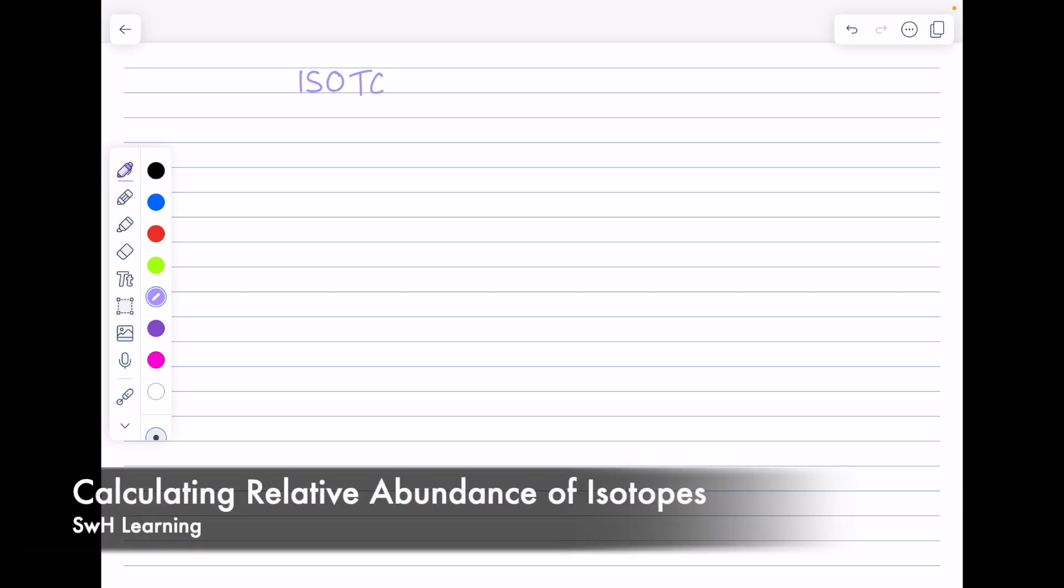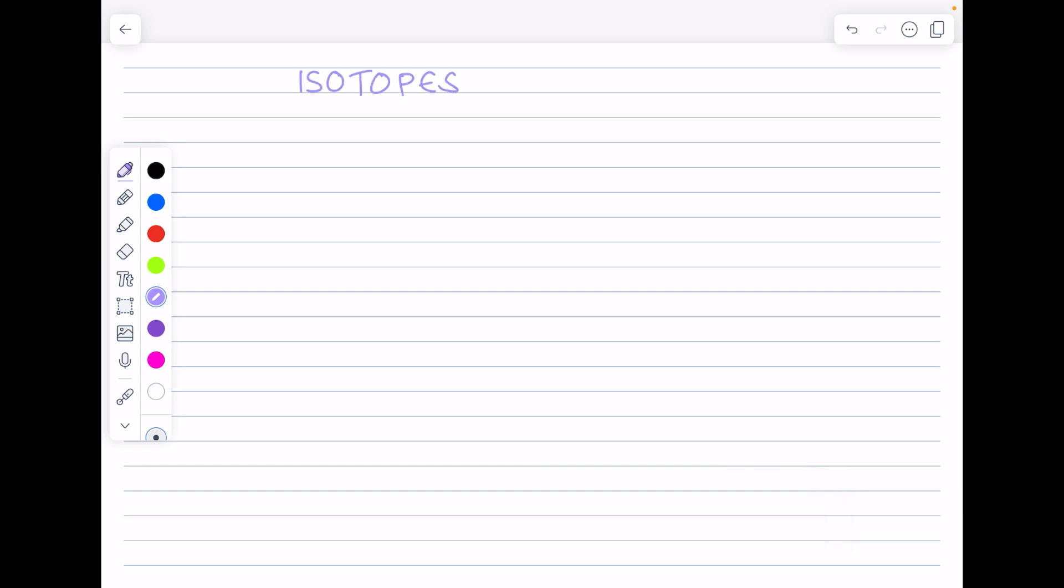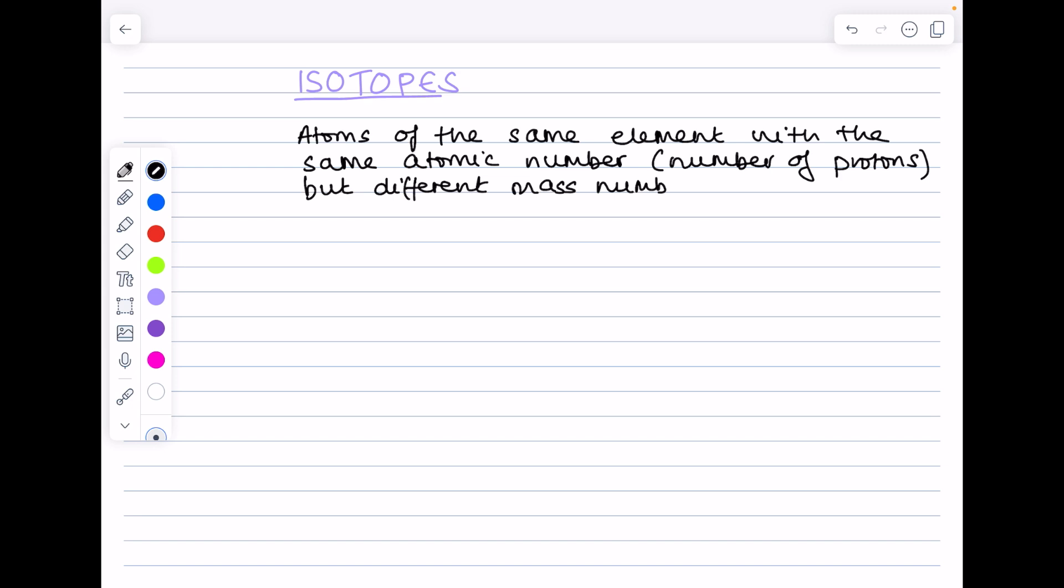Today's A-level chemistry video is all to do with isotopes. We'll start with our definition of an isotope. So it's atoms of the same element with the same atomic number, which remember is the number of protons, but a different mass number. And what changes that mass number is the fact that the number of neutrons changes.